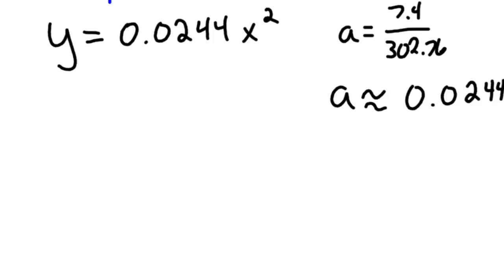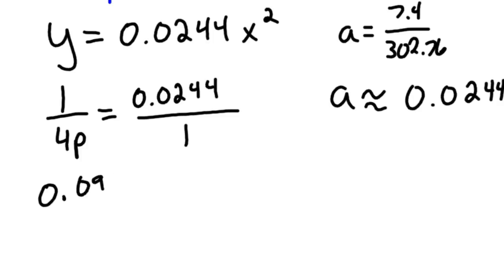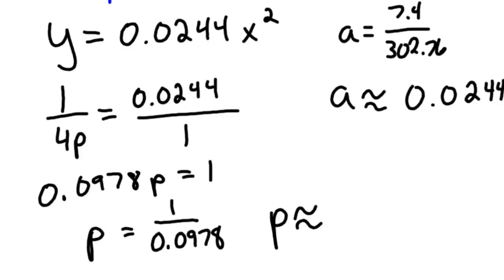But let's go ahead and find this distance p. So we know 1 over 4p equals 0.0244. And so I'll put that over 1 and cross multiply. So 4 times 0.0244 is 0.0978p equals 1. And so p is equal to 1 divided by 0.0978. And so p is approximately equal to 10.2 centimeters. Because I measured that initial meter stick in centimeters. So we've got a focus location of 10.2 directly above the vertex. So let's take a look at that.